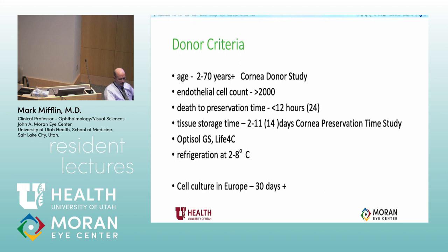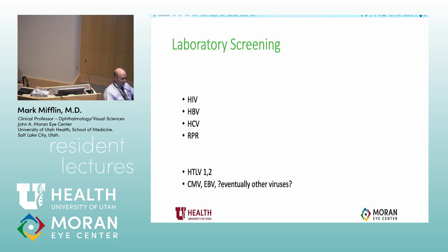The required testing for donors is HIV, hepatitis B and C, and RPR. There are other tests — for example, California requires testing for HTLV-1 and 2. Organ donors are also tested for CMV and EBV, and often those titers are positive and we still accept the tissue.